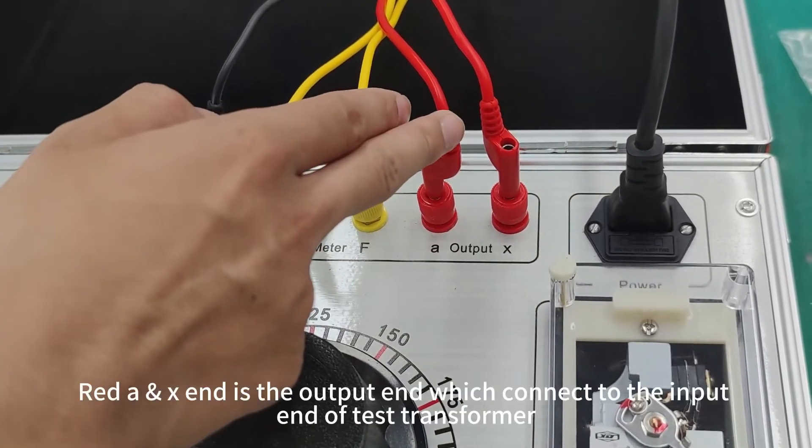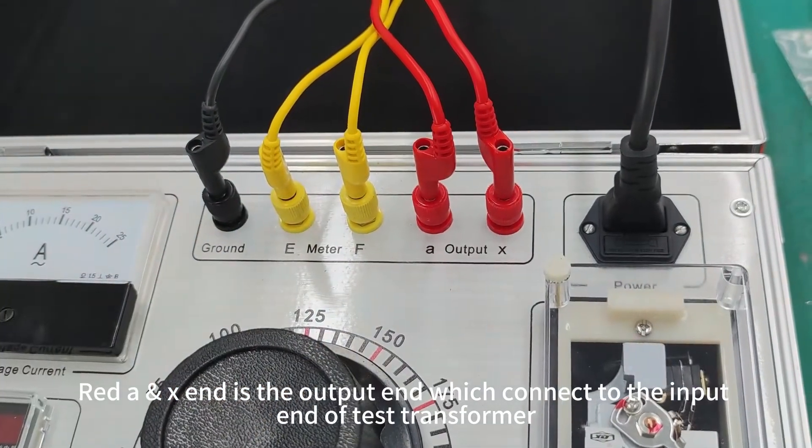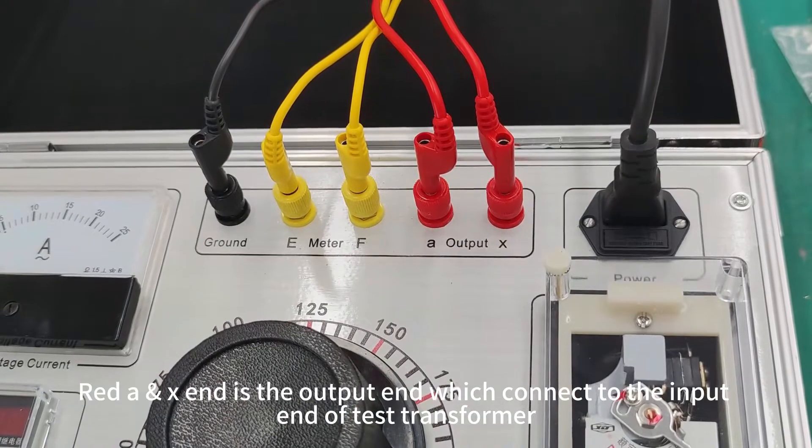Red A and X end is the output end which connects to the input end of test transformer.